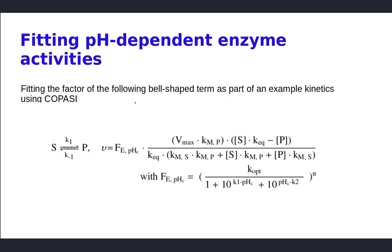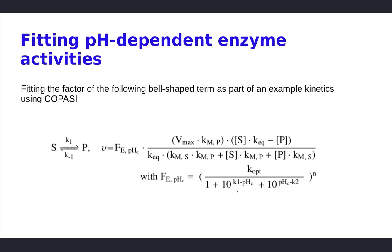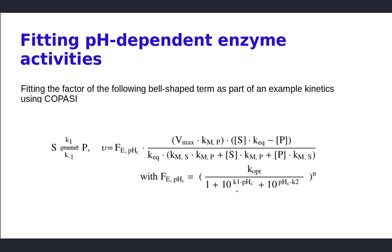She used Copasi to fit a factor for the activity of each enzyme, which follows a bell-shaped pH curve, in a divide-and-conquer strategy. She wasn't yet fitting the individual kinetic parameters, but simply the pH dependencies based on experimental measurements. So she had this factor fitted for all of the enzymes.